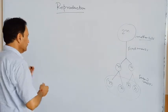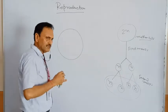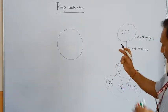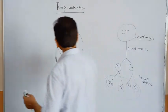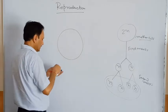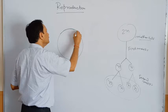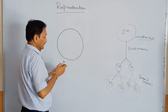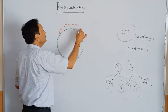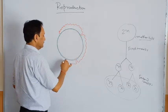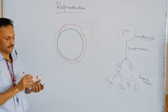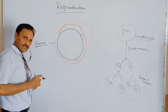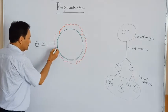A typical pollen grain is generally circular, though it may be boat-shaped or elliptical. Most pollen grains are circular. The pollen grain has a thin continuous inner layer called the intine, and a thick discontinuous outer layer called the exine — the most resistant part of the pollen grain.